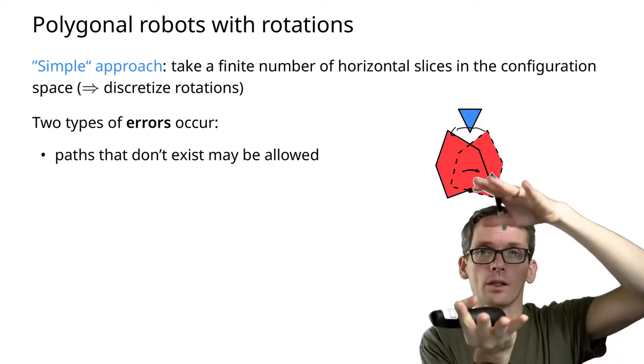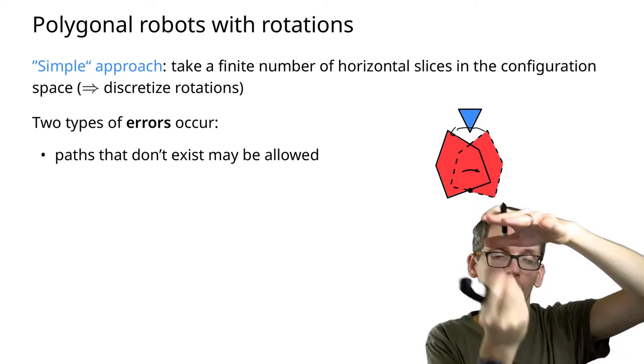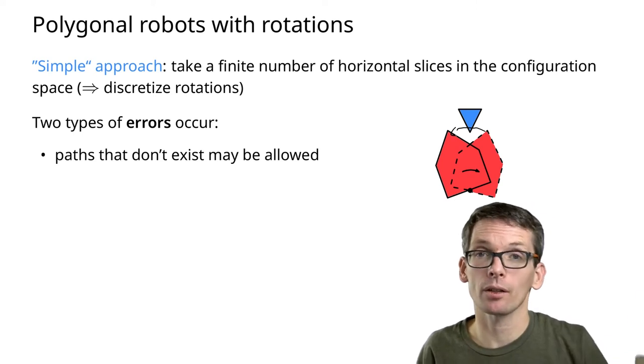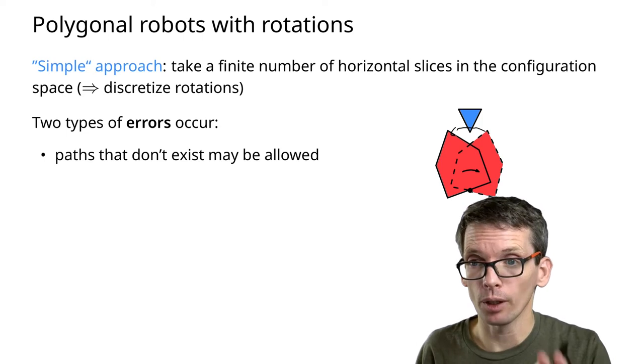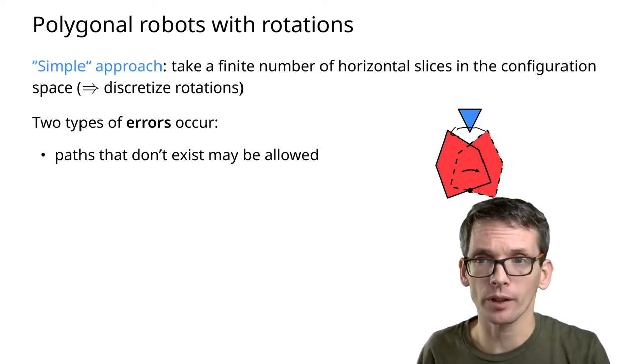It's free in this slice, it's free here, but going up I would bump into an obstacle and that would potentially destroy my robot. This error we definitely want to avoid.